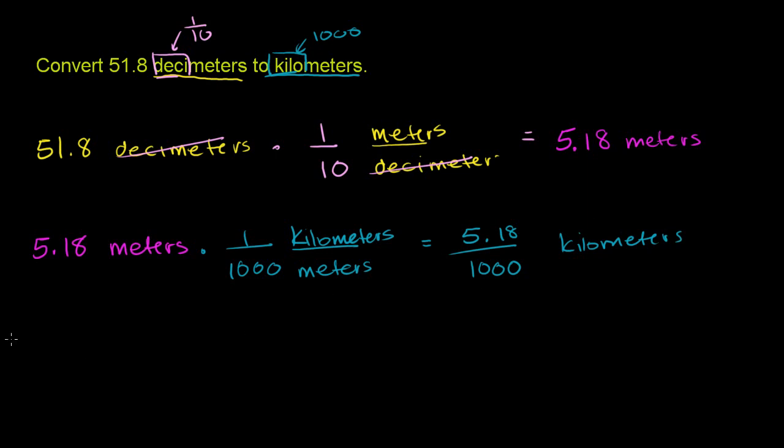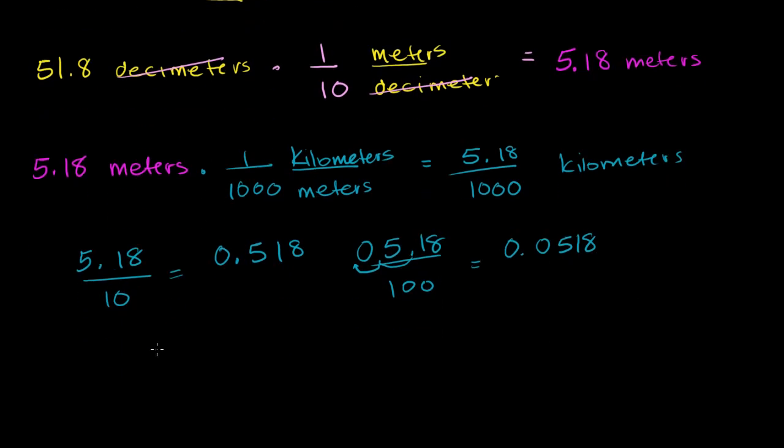Now, the easy way to do this, if we take 5.18 over 10, we just move the decimal 1 to the left, it's going to be equal to 0.518. If we take 5.18 and divide it by 100, we're going to take the decimal 2 to the left. So 1, 2, we're going to have to add a 0 here. So it's going to be 0.0518.